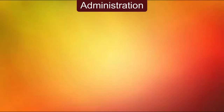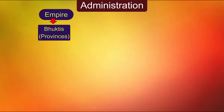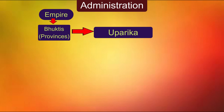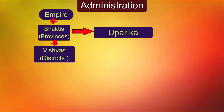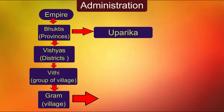Let's know about the administration of the Gupta period. The king was assisted by the council of ministers, and these ministers were called Amatyas. The entire empire was divided into bhukhtis or provinces. The head of the provinces was called Uparika. Bhukhtis were further divided into vishas or districts, and also into vithis. Vithis were the groups of villages. Gram or village was the smallest unit.